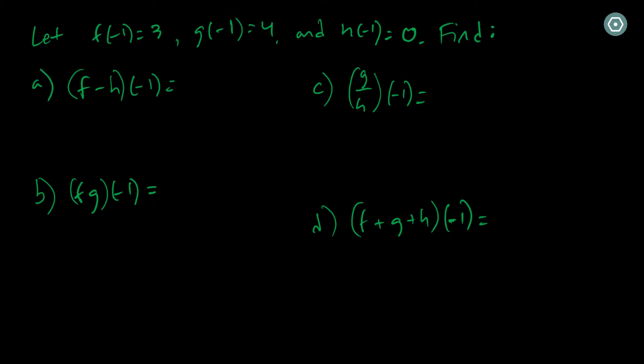Now for another example, just to further our understanding of these new types of functions that we can create, here I have, let's let f of negative 1 equal 3. So I don't know what f is, I just know when the input's negative 1, I get 3. When I input negative 1 into the g function, my output's 4. And h of negative 1 is 0, meaning that when I plug negative 1 into the h function, I get a result of 0.